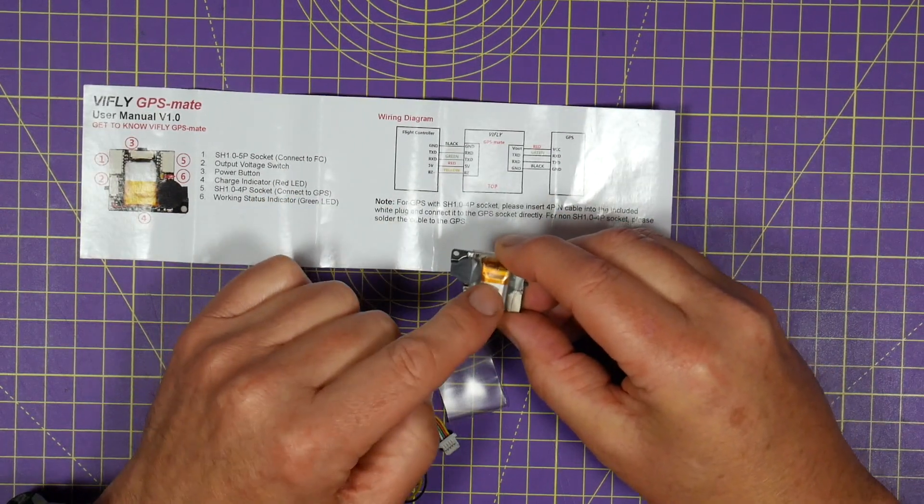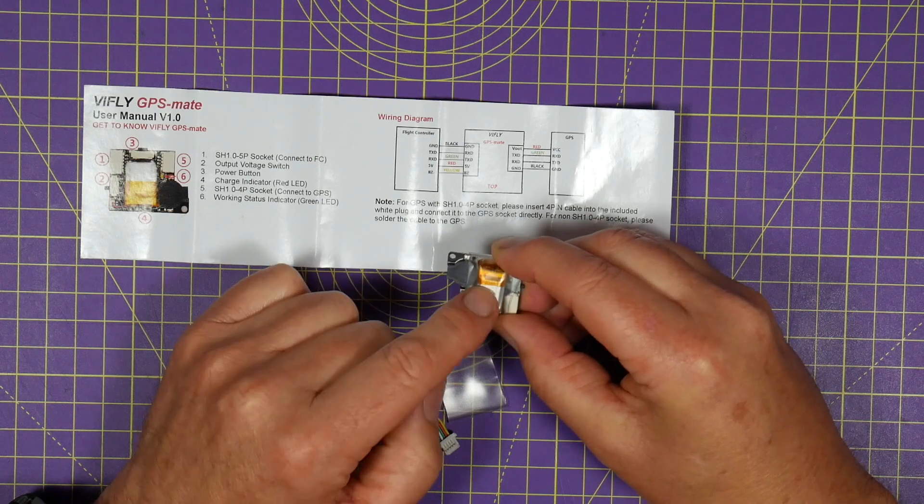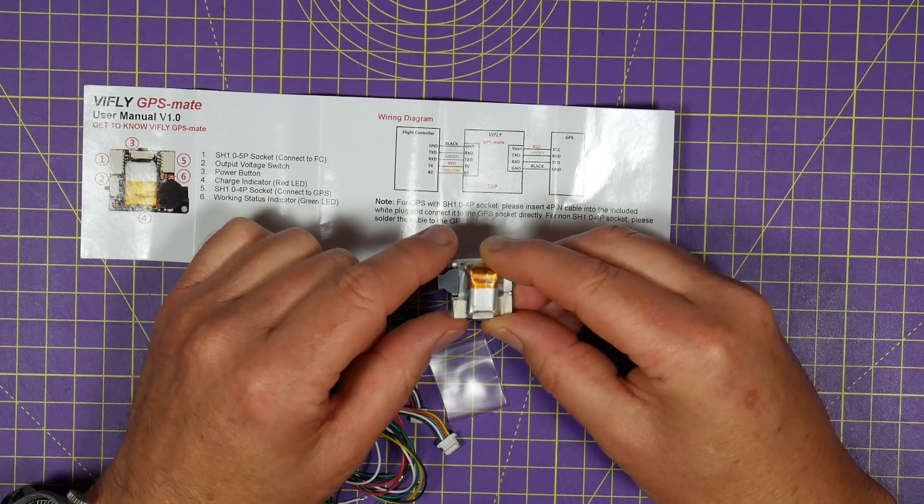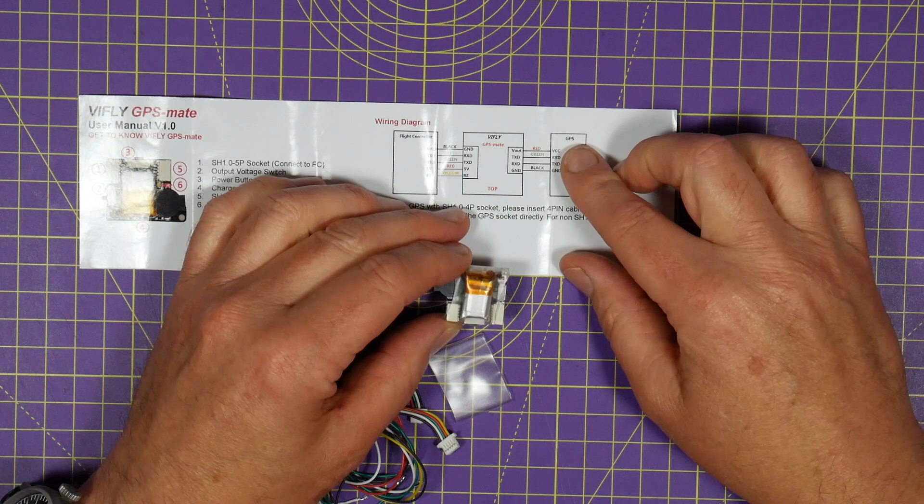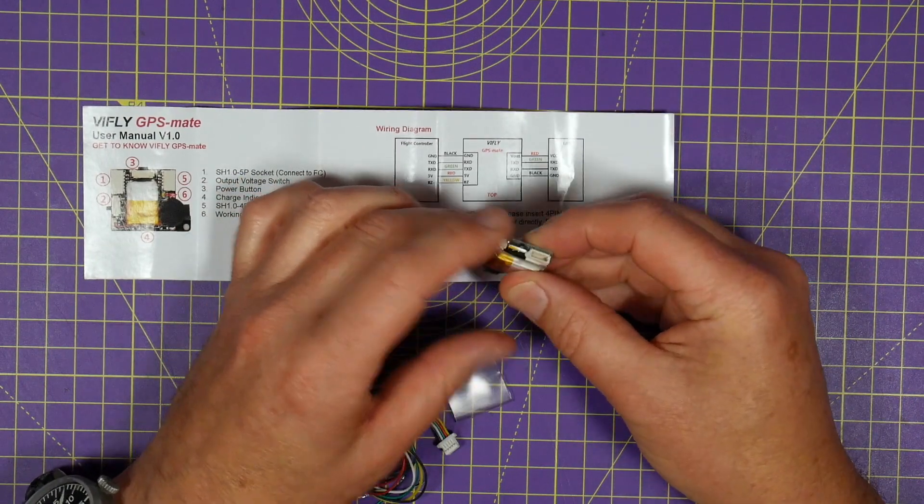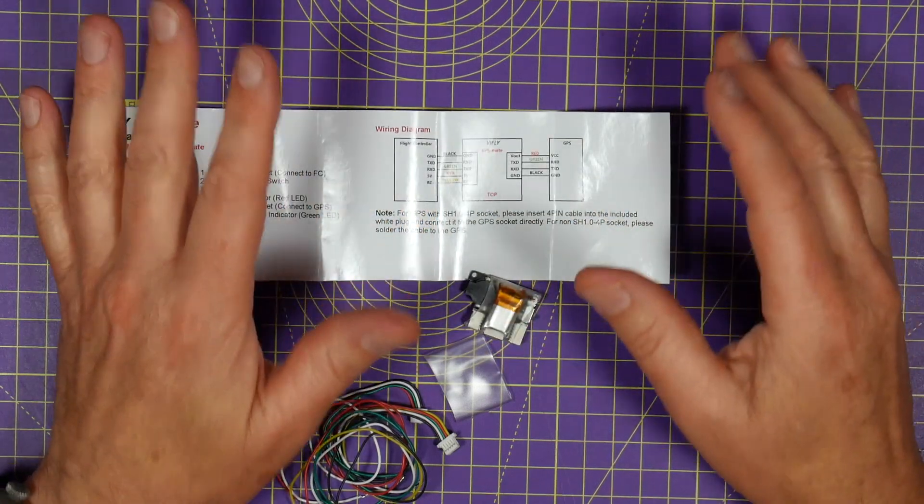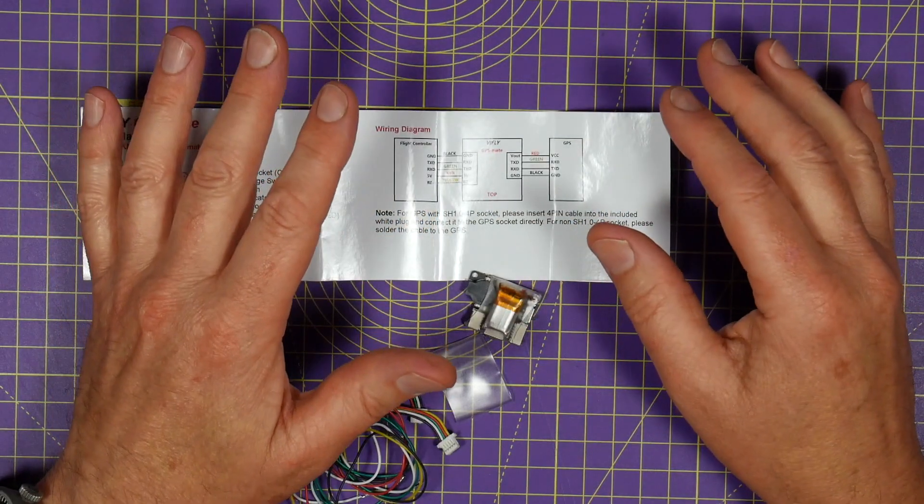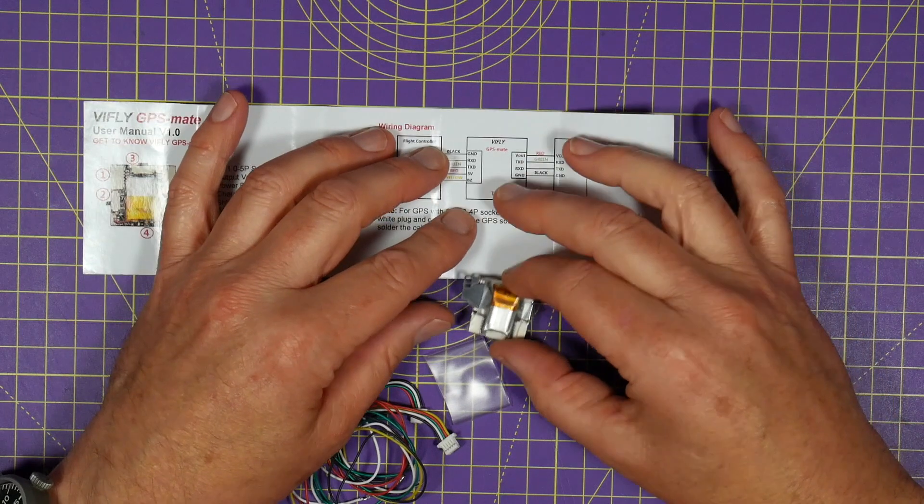And this battery here is charged by the main flight battery and it stays on and keeps the GPS module on until you turn it off with this little switch on the side here. And this is a fantastically useful and elegant solution to a really annoying feature of GPS enabled drones.